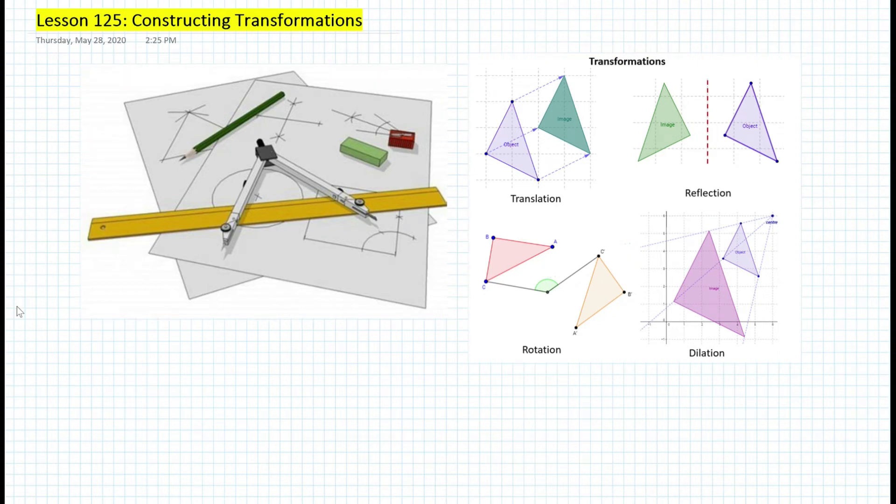Hi everyone, this is Mr. Cervone. Welcome to my final lesson of my math channel. In today's lesson we will be learning about constructing transformations using your compass and a straight edge. The four main constructions that deal with transformations are translation, reflection, rotation, and dilation. In today's lesson we will be looking at how to construct these types of transformation using your compass and straight edge.